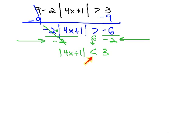In this problem, the absolute value is less than a number. When the absolute value is less than a number, we set up a tripartite or three-part inequality.